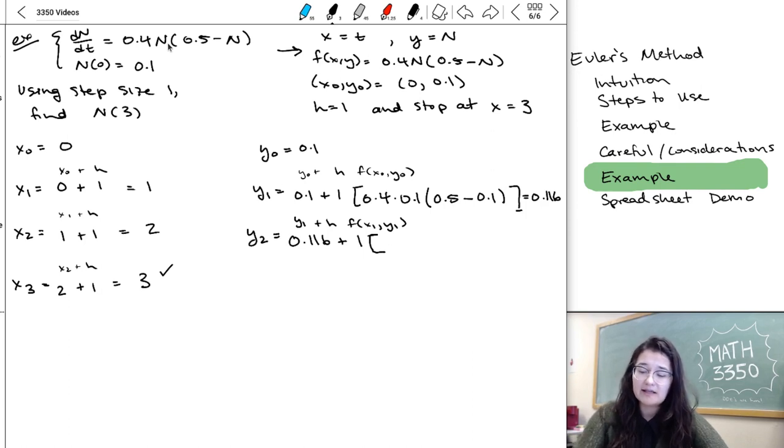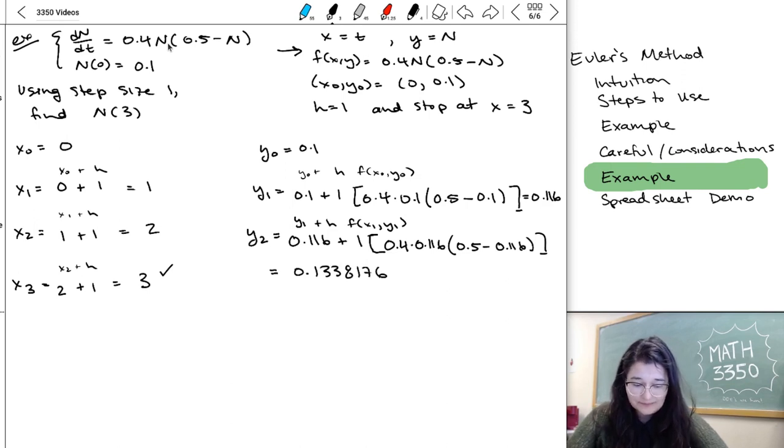I gotta plug in 0.116. So it's 0.4 times 0.116 times 0.5 minus 0.116. And when I plug that into a calculator, I get 0.1338176, which is a lot.